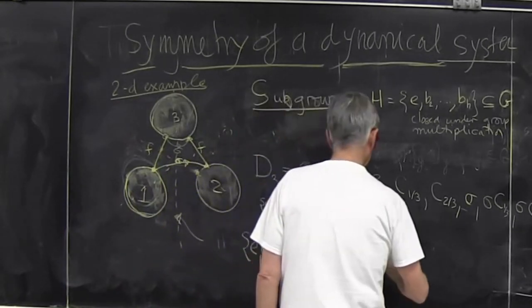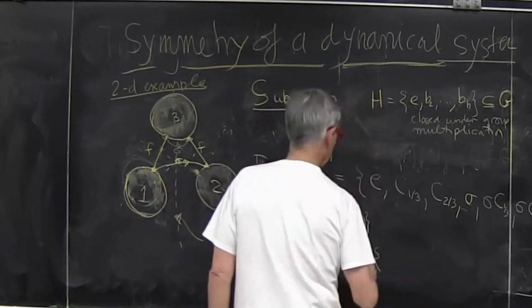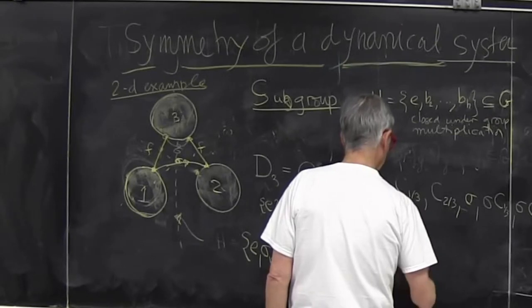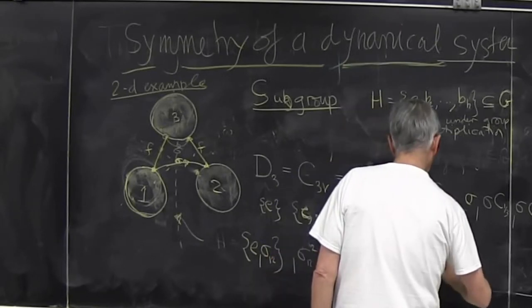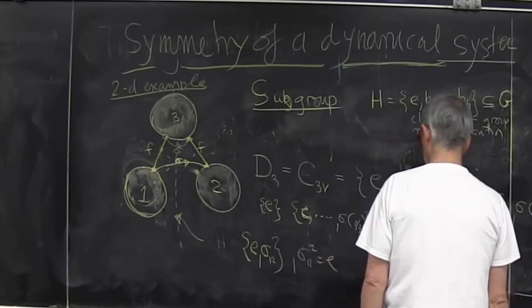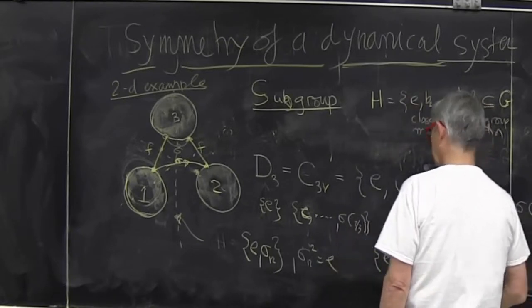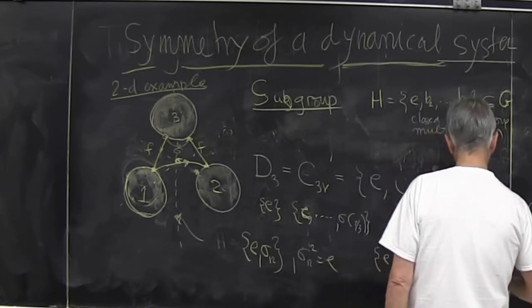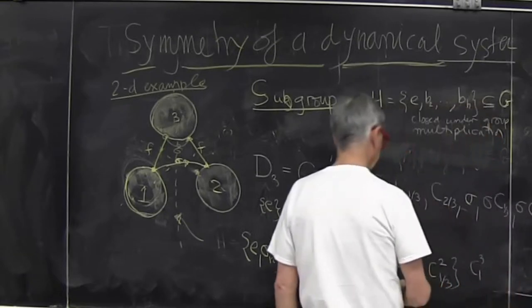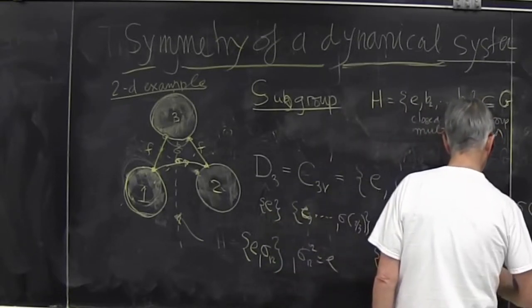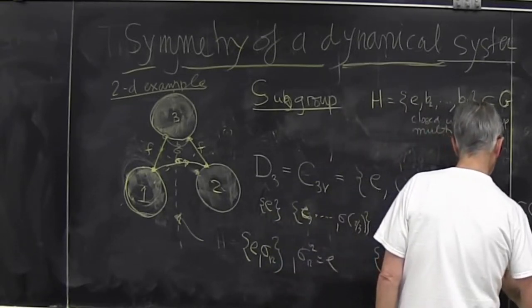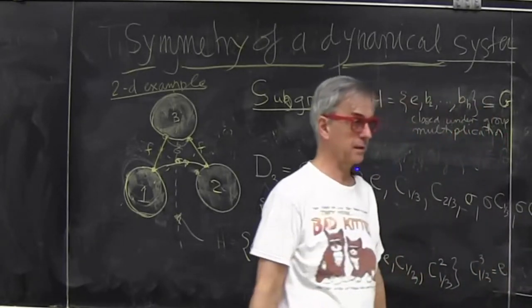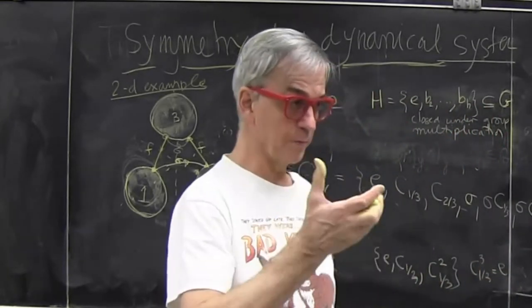And then I have an example of group of order three, which is I go one third around. Or if I do it twice, that's a group with three elements. Because I have that C cubed of this generator of the group one third is identity. If I rotate three times, I'm back. This cyclic group is order three.